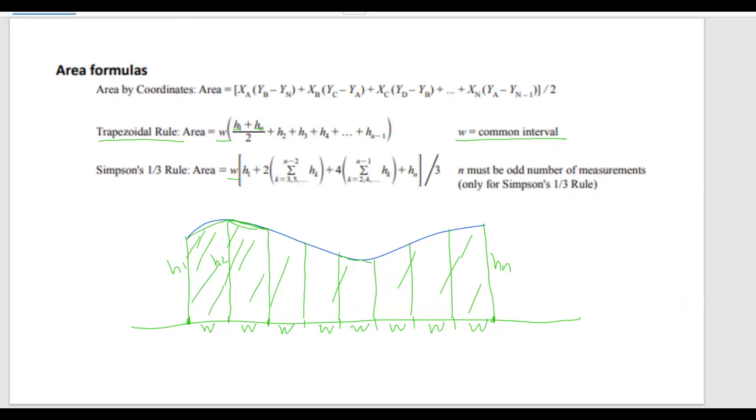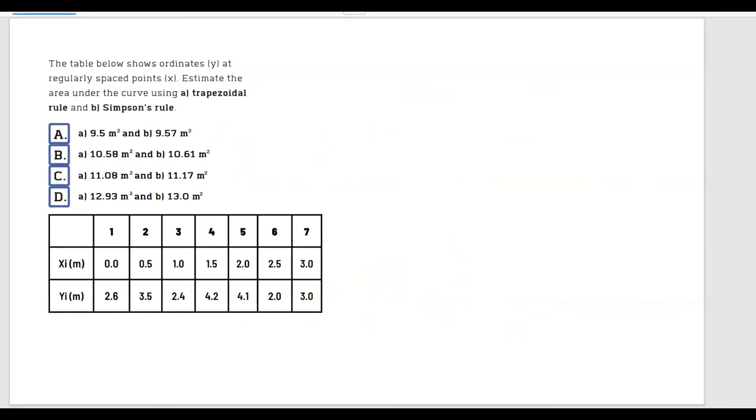So the area using trapezoidal rule and Simpson's rule is an approximation of the real area. Another thing to note is that in order to use Simpson's rule, the number of the intervals must be an odd number. So in our case we have one, two, three, four, five, six, seven, eight intervals, which means we're not able to use Simpson's rule, but we can use trapezoidal rule.